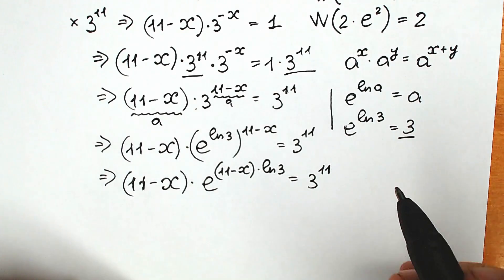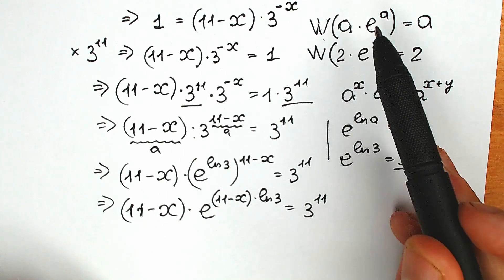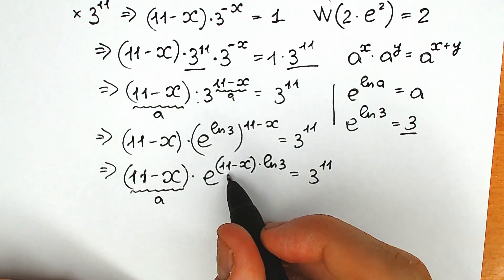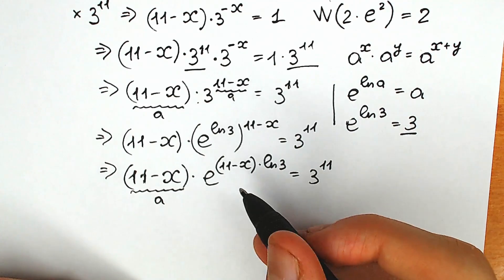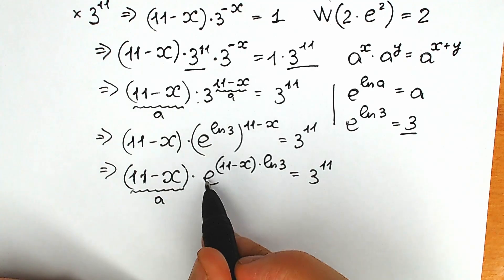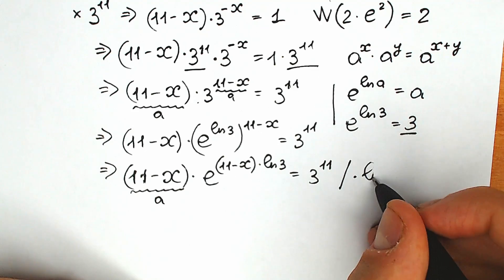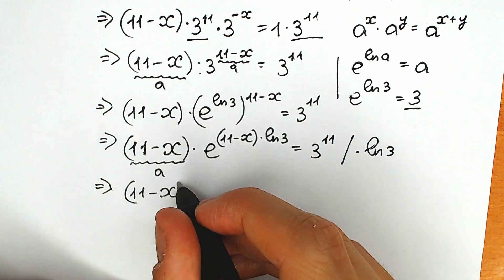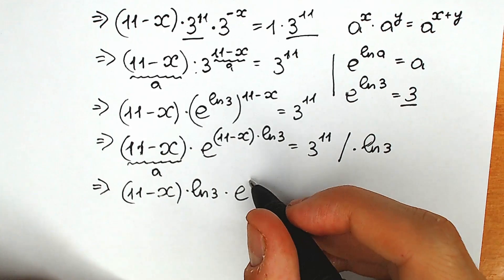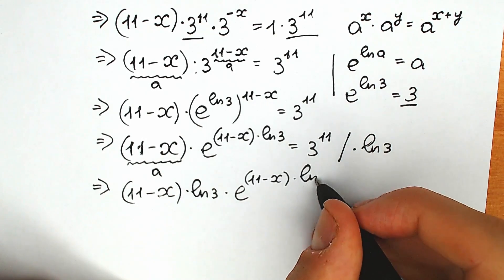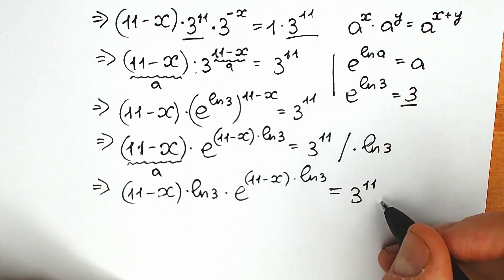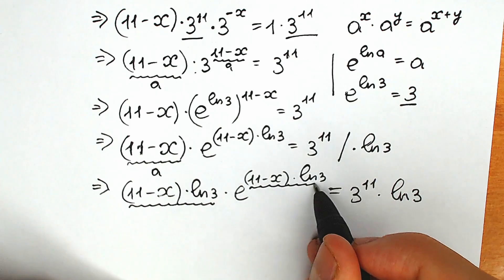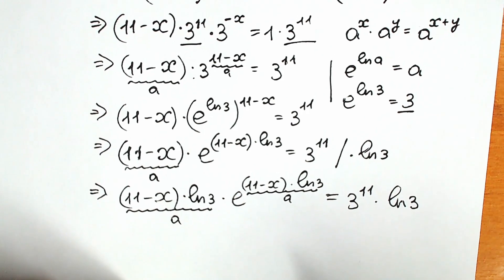Now let's look closely at what we have on the left side. We need the expression a times e to the power a for the Lambert W function. We have (11 minus x) and we have e, which is great, but in the exponent we have (11 minus x) times natural log 3. The last step is to multiply both sides by natural log 3. Then we will have the same expression in both the coefficient and the exponent. So multiplying both sides by natural log 3 gives us: (11 minus x) times natural log 3, times e to the power (11 minus x) times natural log 3, equals 3 to the power 11 times natural log 3. Now (11 minus x) times natural log 3 is our a, appearing in both places — this is exactly the form for Lambert W.